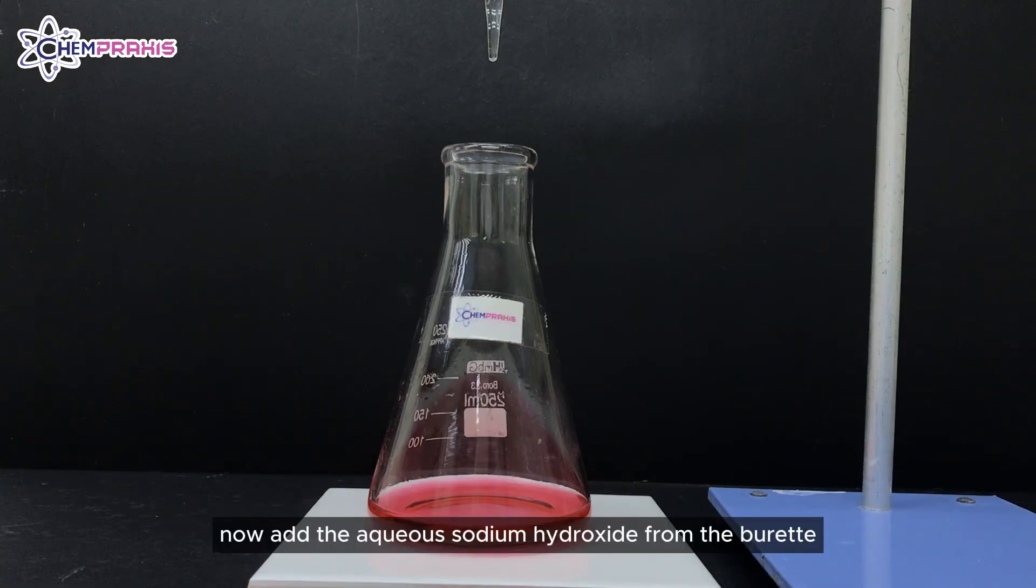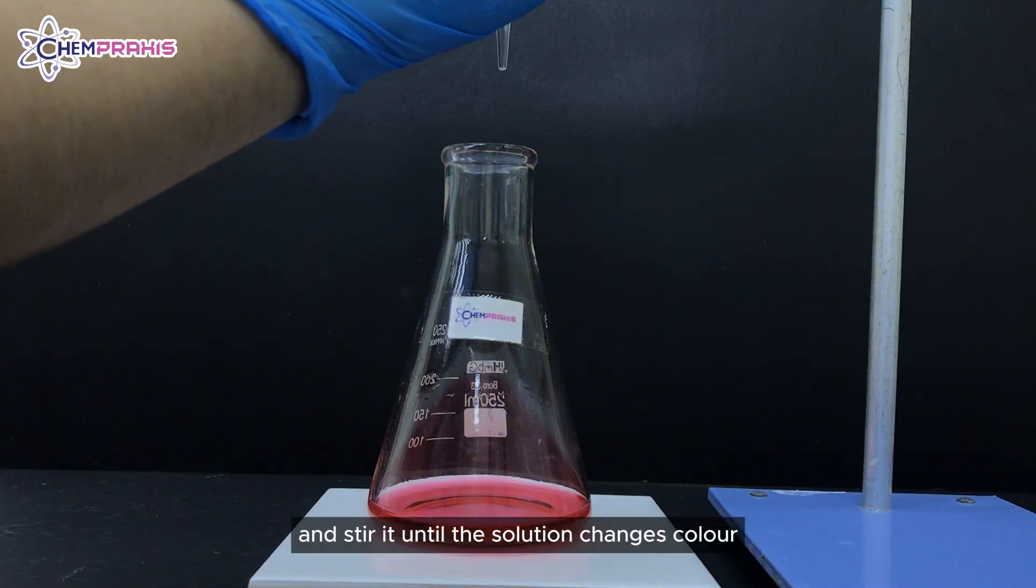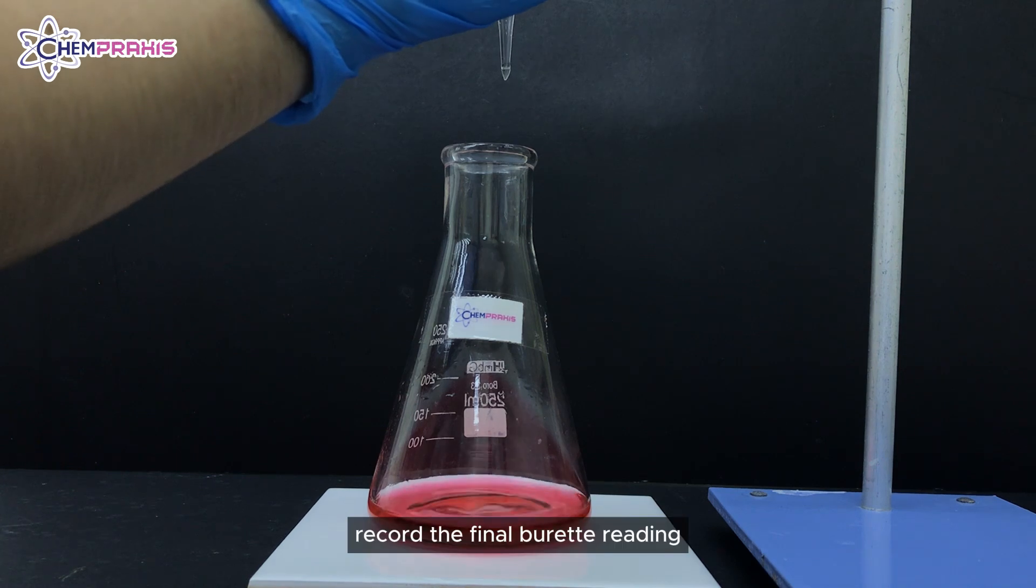Now add the aqueous sodium hydroxide from the burette to the conical flask and stir it until the solution changes colour. Record the final burette reading.